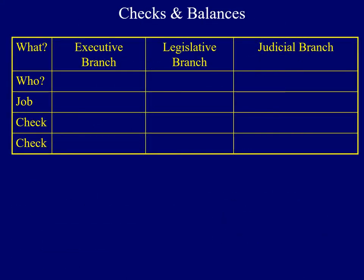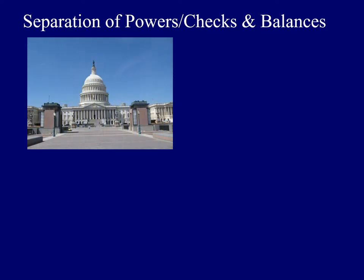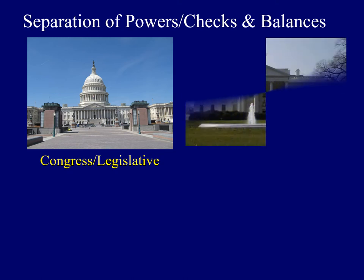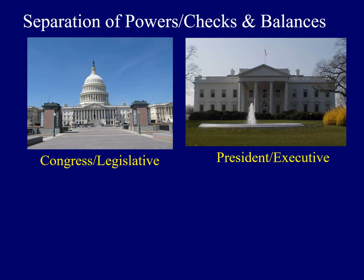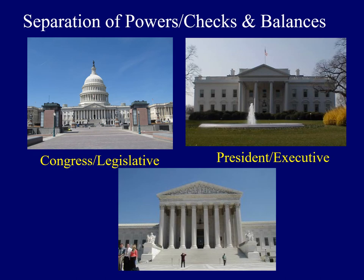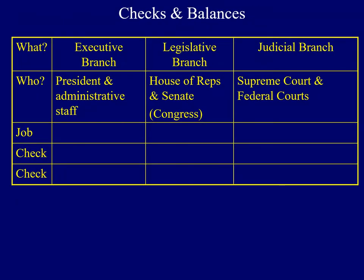To approach this topic, we'll fill in different aspects of a chart. First we'll discuss who is included in the three branches, then identify the job of each, and finally explore five separate checks — ways in which the different branches check or stop the actions of the others in hopes of protecting people's freedom and liberty. The legislative branch or Congress meets in the United States Capitol; the president lives and works in the White House; and the United States Supreme Court building houses our judiciary. The executive branch includes the president and administrative staff; the legislative branch includes the House, Senate, and Congress; and the judiciary includes the federal courts and the Supreme Court.